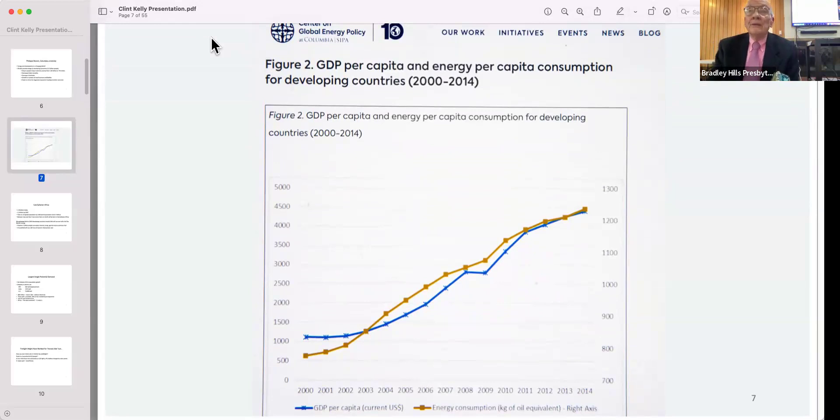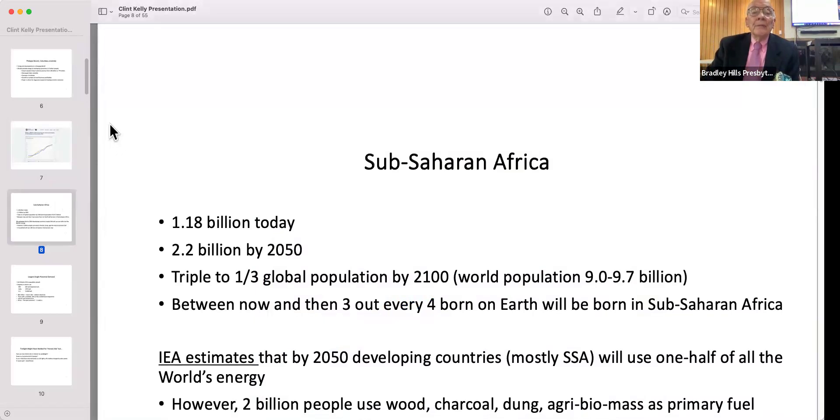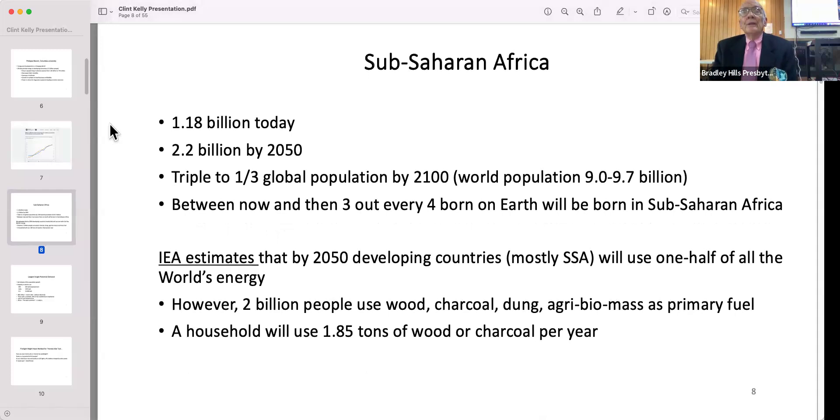The place where Carl and I have been doing most of the projects is in sub-Saharan Africa. Right now three out of every four people born on this planet are born in sub-Saharan Africa, and it is likely that by the turn of the century a third of the world's population will reside in sub-Saharan Africa.